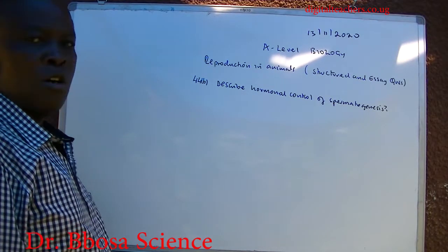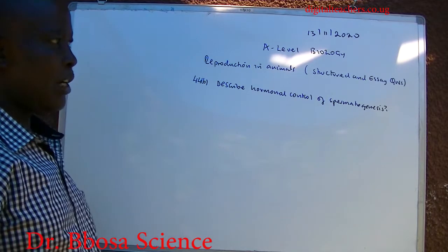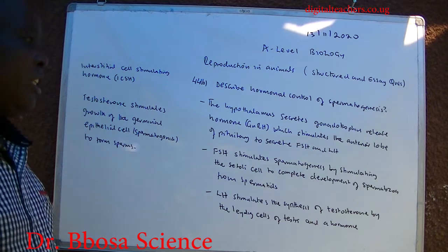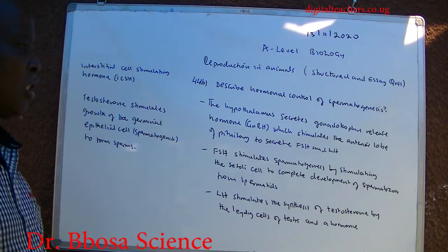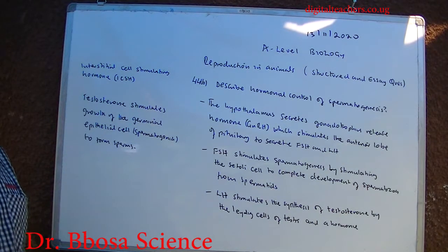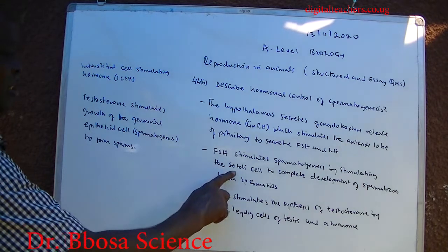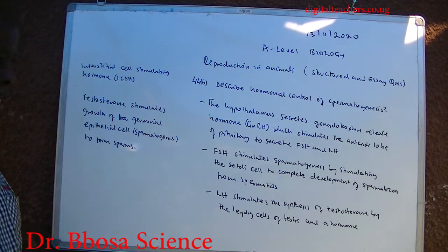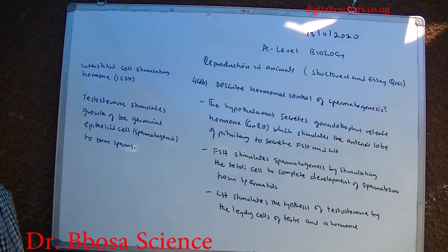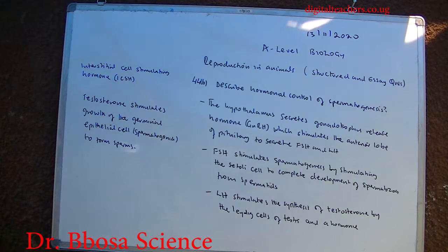Number 4b: describe hormonal control of spermatogenesis. The hypothalamus secretes gonadotrophin releasing hormone, which stimulates the anterior lobe of the pituitary to secrete follicle stimulating hormone and luteinizing hormone. FSH stimulates spermatogenesis by stimulating Sertoli cells to complete development of spermatozoa to form spermatids. LH stimulates synthesis of testosterone by the Leydig cells of the testes, also known as interstitial cell stimulating hormone. Testosterone stimulates growth of the germinal epithelial cells (spermatogonia) to form sperms.